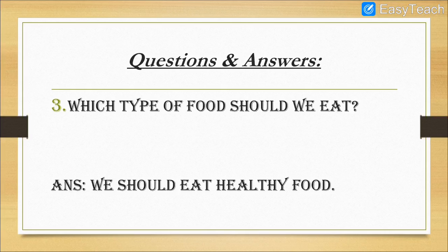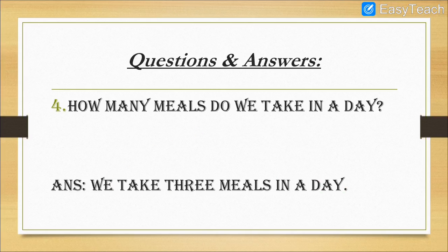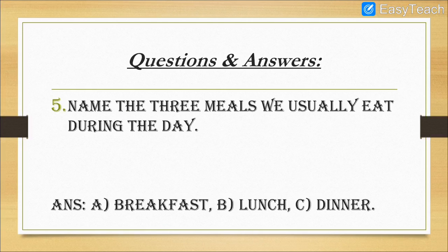Number three: which type of food should we eat? We should eat healthy food. Number four: how many meals do we take in a day? We take three meals in a day. Number five: name the three meals we usually eat during the day. The three meals that we usually eat during the day are breakfast, lunch, and dinner. I told you to learn the spellings as well. So this was all we had learned in the previous video.